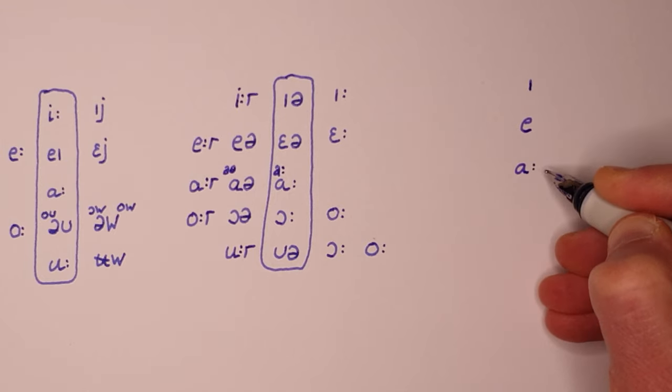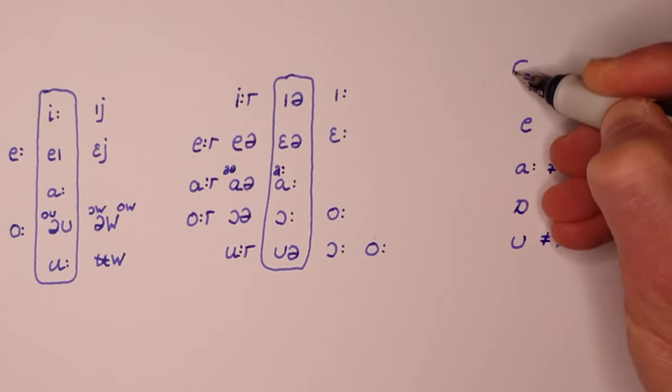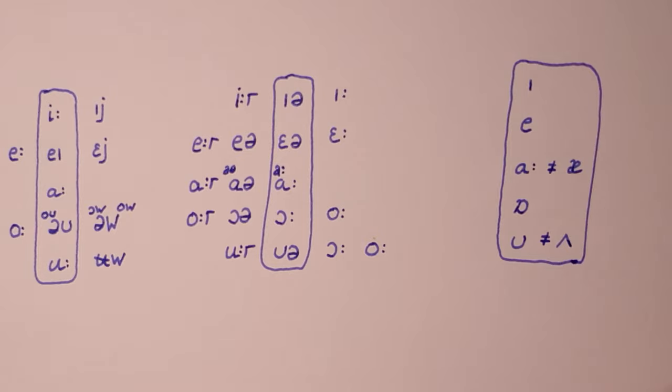We've also seen the lengthened vowel of bath in palm and start. The vowels of trap, lot and strut, on the other hand, are the result of splits and mergers involving closings, openings, roundings and unroundings that are beyond the scope of this video.